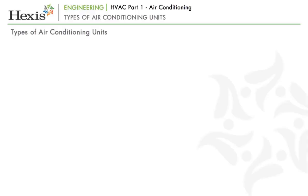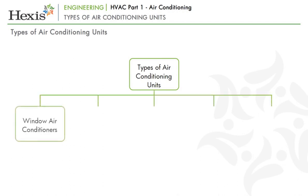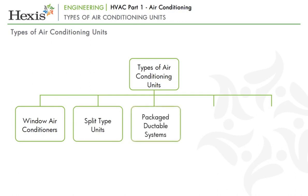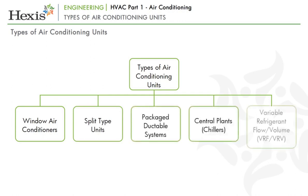Now that we have learnt about the basic components and working principle of an air conditioning system, let us look at the different types of units used in facilities. These systems include window air conditioners, split type units, packaged ductable systems, central plants, and variable refrigerant flow or volume — VRF or VRV.